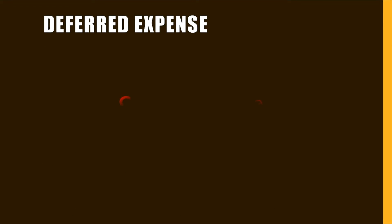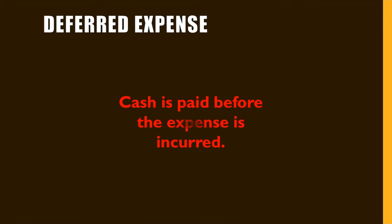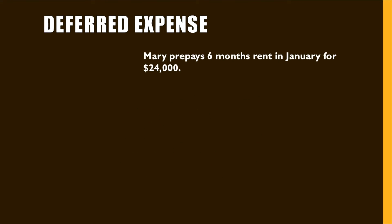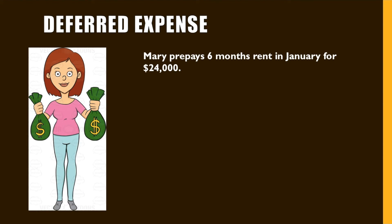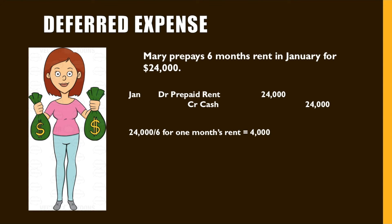A deferred expense is when cash is paid before the expense is incurred. The most common example of this is prepaid rent. Suppose Mary prepays six months of rent in January for $24,000. The journal entry would record in January: debit prepaid rent, credit cash. In February, after one month's rent has been used, it would debit rent expense of $4,000 and credit prepaid rent.